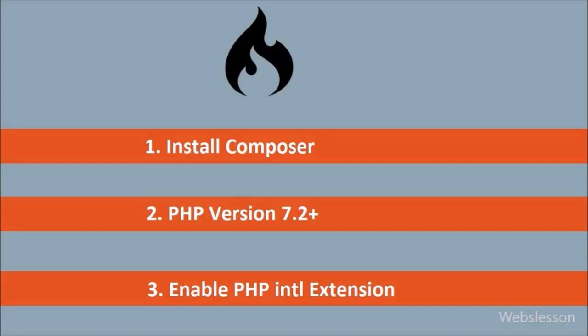First we want to download CodeIgniter 4 Framework. To download it, we need to install Composer on our computer, and by using Composer we can download CodeIgniter 4 Framework. Another pre-requirement is that our PHP version must be 7.2 or higher. A third pre-requirement is that we need to enable the PHP internationalization extension from the php.ini file.